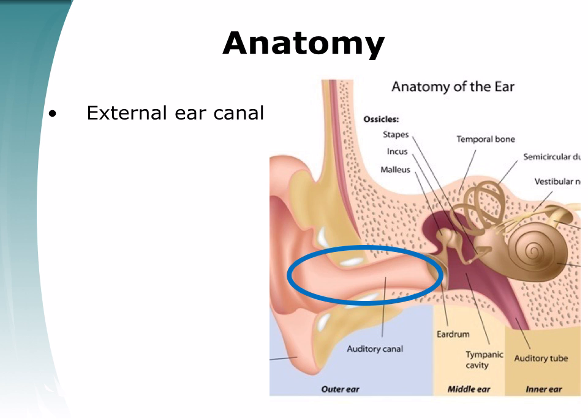The medial portion is very thin-skinned directly over the bone, with no skin appendages. The canal curves anteriorly and medially in adults, which may obscure the anterior tympanic membrane. It comprises two-thirds of the total canal in adults, and less in infants and children.